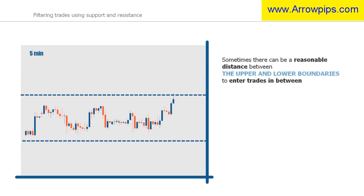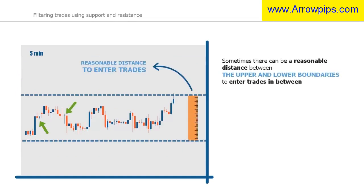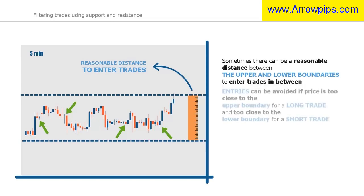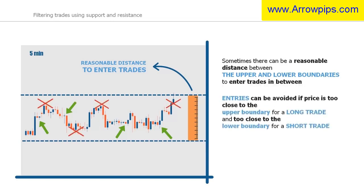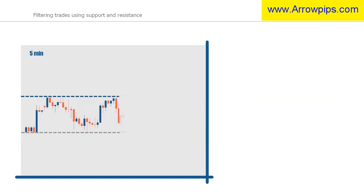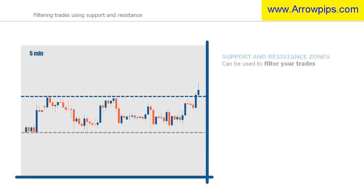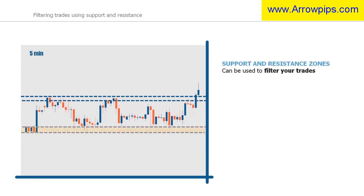When the market is in a large range, there can be reasonable enough distance between the upper and lower boundaries to enter trades in between. If you identify an upper and lower boundary of a range, you can avoid trades if the entry is too close to the upper boundary for a long trade, and too close to the lower boundary for a short trade. To do this, you can look for the most recent support and resistance levels on the 5-minute chart. Looking at the chart, you can see the support and resistance zone, which you can use to filter your trades.